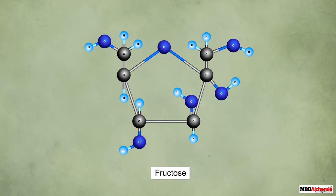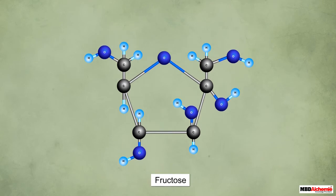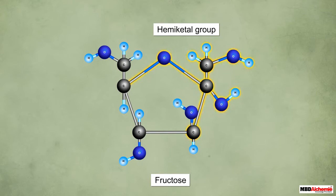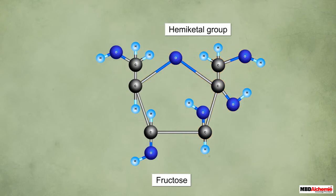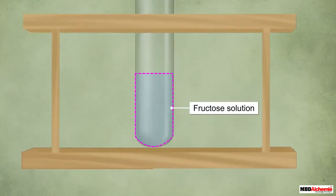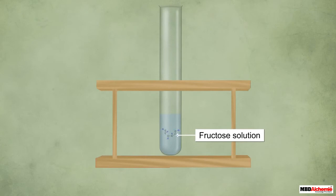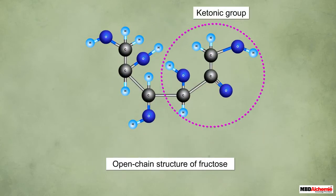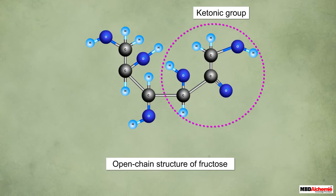Fructose is also an example of such a carbohydrate. It is a monosaccharide with a hemiacetal group in its cyclic structure. In the solution of fructose, the ring structure opens up and the hemiacetal group changes to a ketonic group.